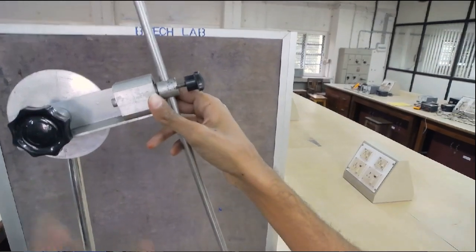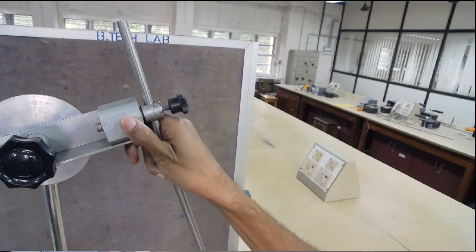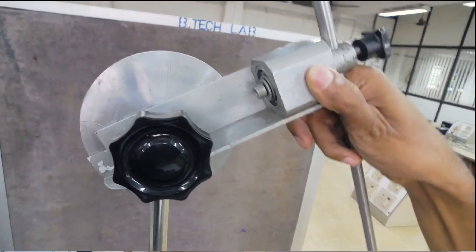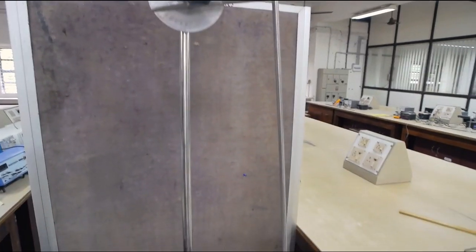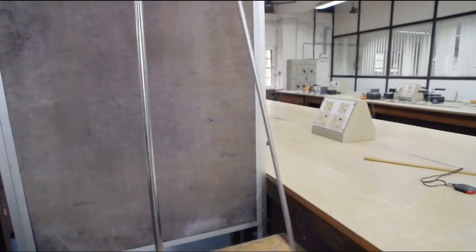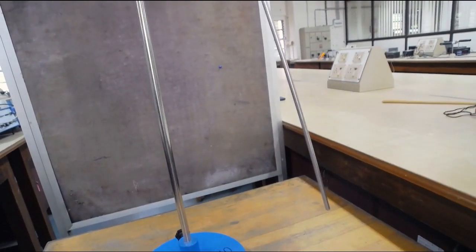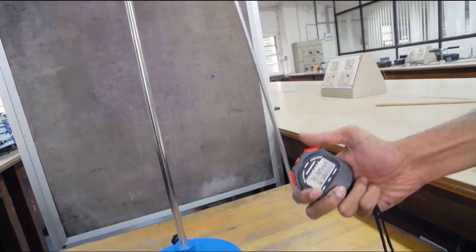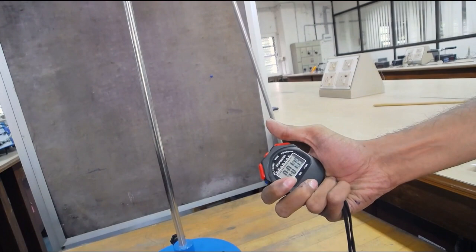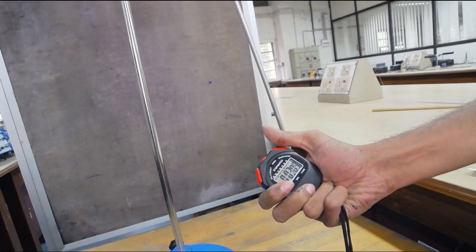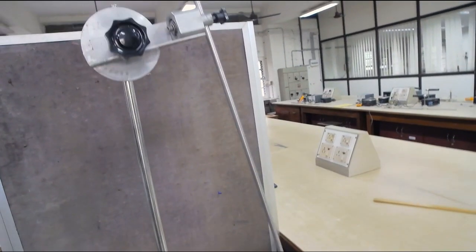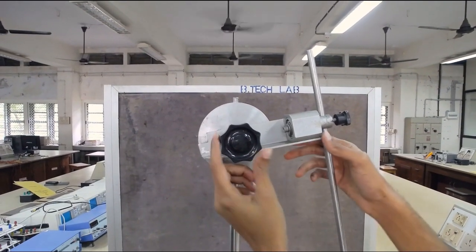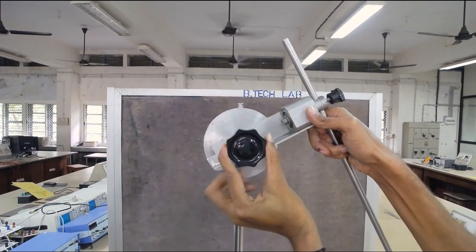Adjust the knob to change the plane of oscillation and note down corresponding angle. Find the time period of pendulum as we discussed earlier. Adjust the pendulum to a different angle and repeat the procedure.